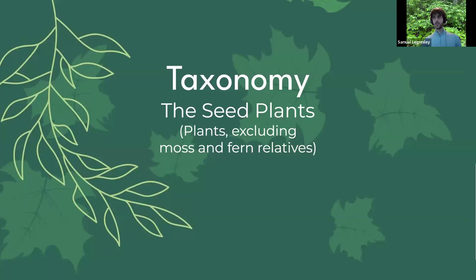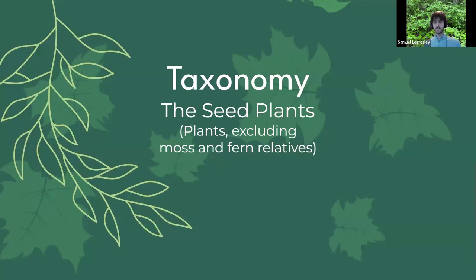We're going to dive right into taxonomy. What's taxonomy? It's basically a way to organize plants and every other living organism. We're going to focus on the seed plants right now. Plants share a common characteristic — leaves are a characteristic of seed plants. This includes plants excluding moss and fern relatives. The plants that exclude moss and fern relatives are mostly seed plants — I'm not talking about algae here. Mosses and ferns don't produce seeds.